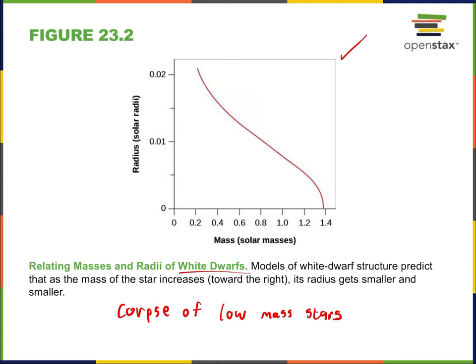Basically, what was left over when the star stopped doing fusion. On the vertical axis is the radius of the white dwarf — they're quite small. Notice this is in solar radii. White dwarfs at their largest are about 2% the size of our sun. They're much, much smaller — planet-sized, Earth-sized — because in a sense they're just the leftover core of what used to be the star. As they become more massive, the size of the white dwarf approaches zero as the mass approaches 1.4 solar masses, and this does present an issue.